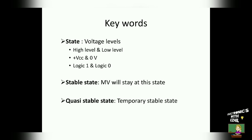The second keyword is stable state. The multivibrator will stay in this state indefinitely until the trigger pulse is applied to it. The third keyword is quasi-stable state, which is actually a temporary stable state or unstable state. The circuit will stay at this state for only a short interval of time.